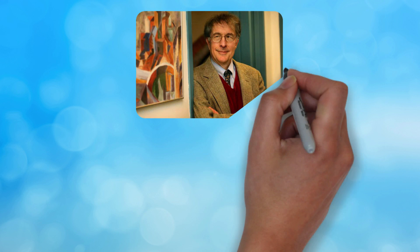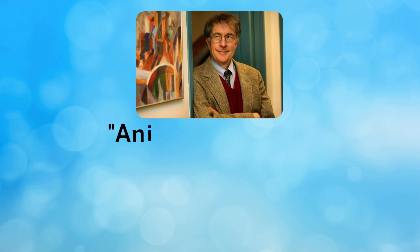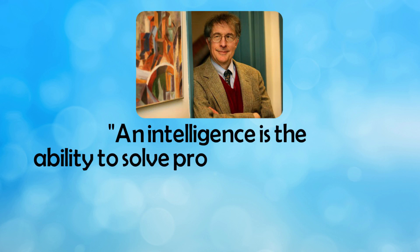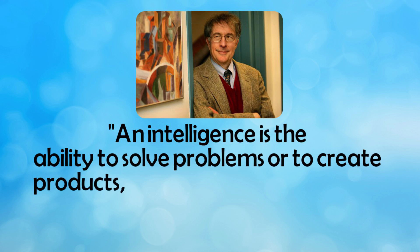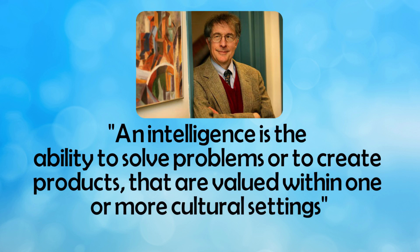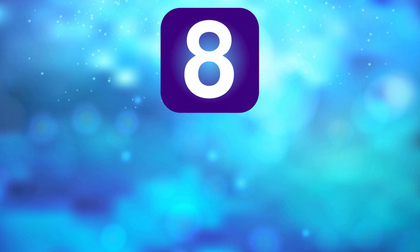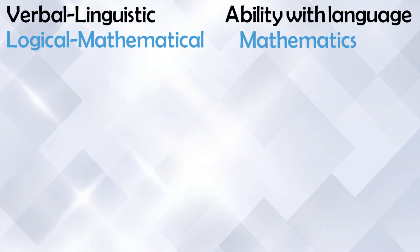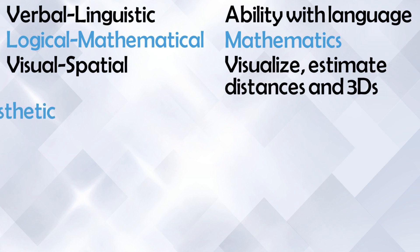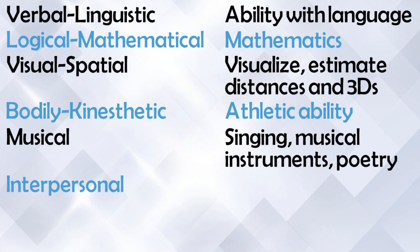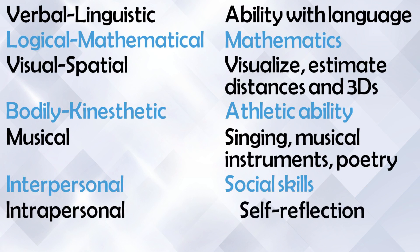Harvard psychology professor Howard Gardner defines intelligence as: 'an intelligence is the ability to solve problems or to create products that are valued within one or more cultural settings.' In 1983, Professor Gardner identified eight different intelligences in people, which are verbal-linguistic, logical-mathematical, visual-spatial, bodily-kinesthetic, musical, interpersonal, intrapersonal, and naturalistic.